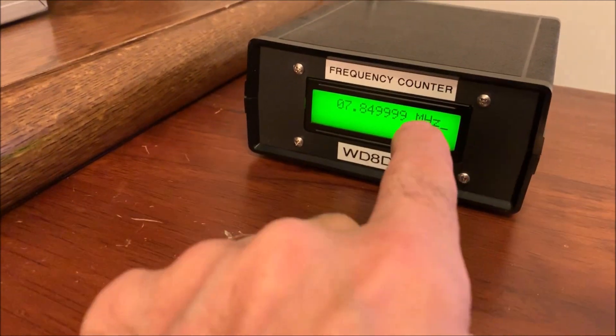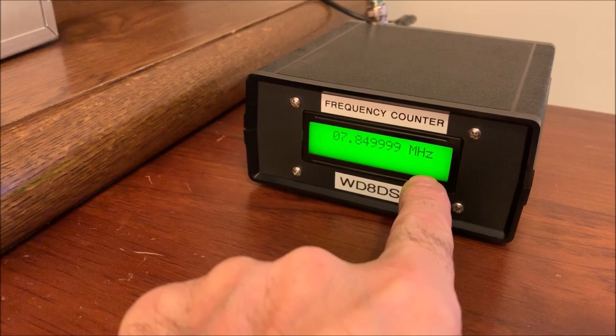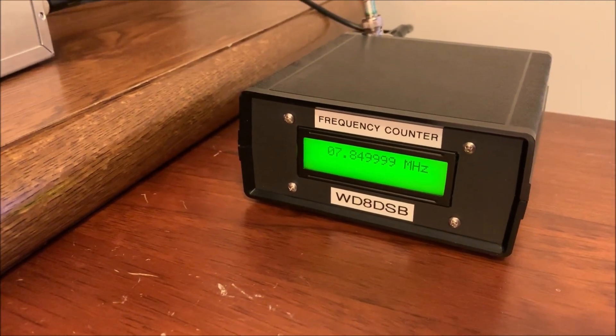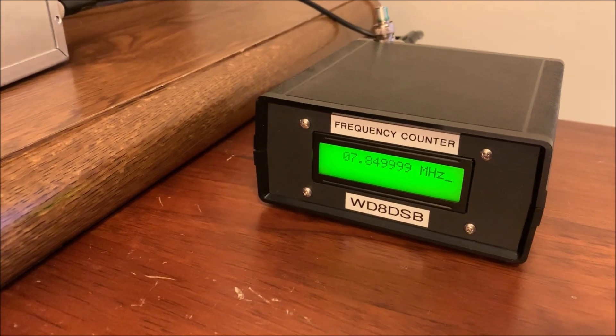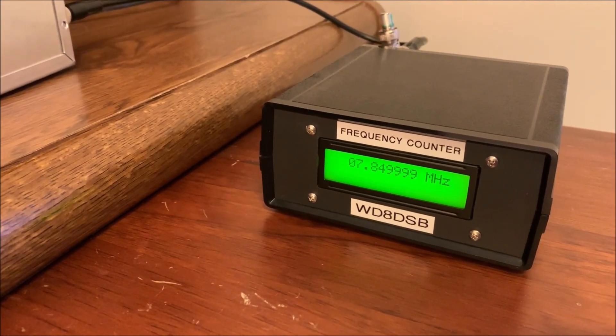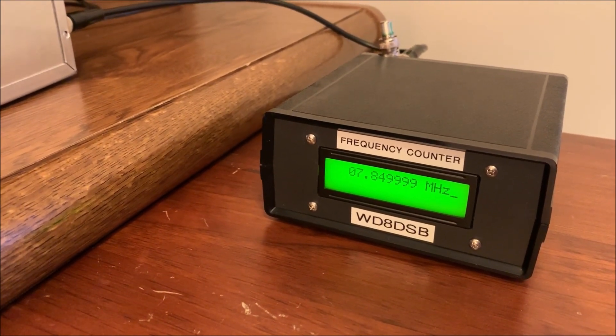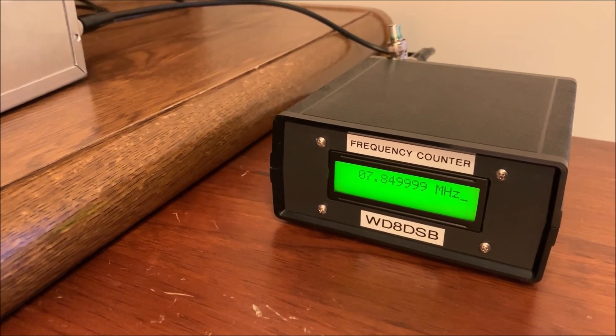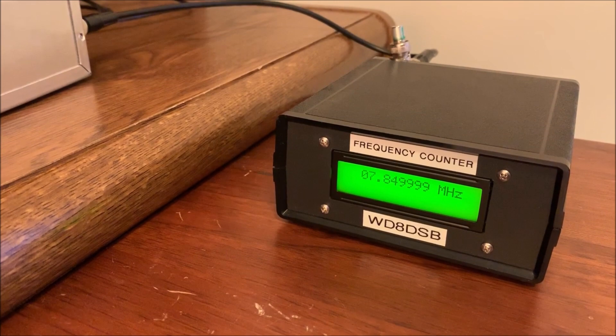And it looks like my frequency counter is reading just about one hertz low consistently. I'll go ahead and hook it up to my 10 megahertz receiver to show you how my accuracy of my frequency counter is based on the WWV signal so we can compare between that and the CHU signal.